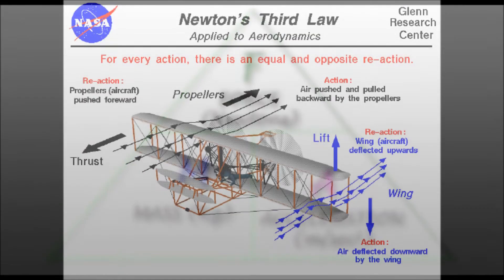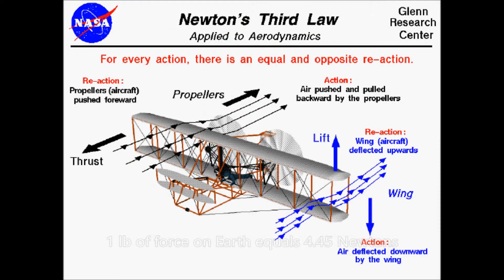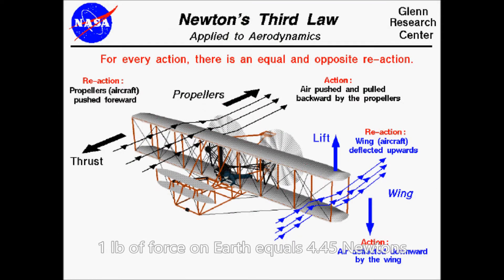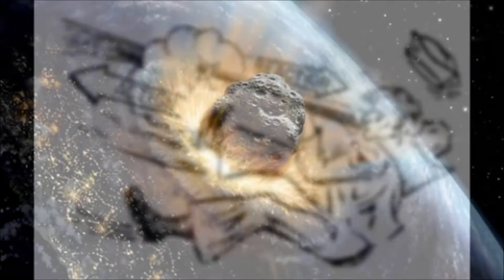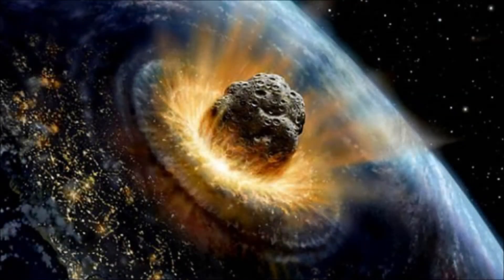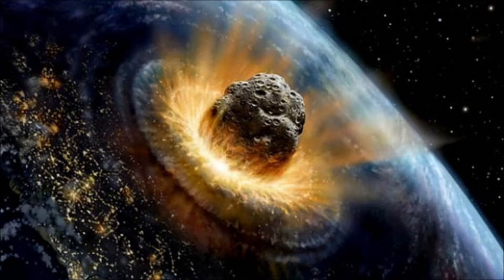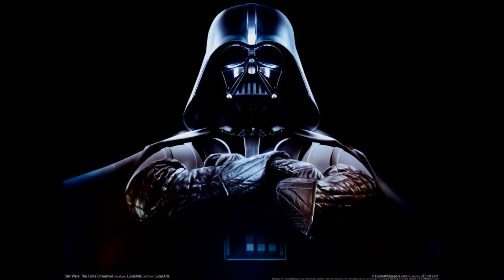The final law states that for every action, there is an equal and opposite reaction. If you throw a rock, for example, you push on the rock and the rock pushes back. When the rock lands, it pushes on the ground, making a crater, and the ground pushes back, stopping the rock. It is when forces interact that interesting things start to happen.